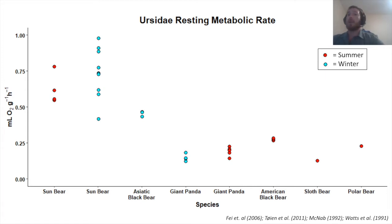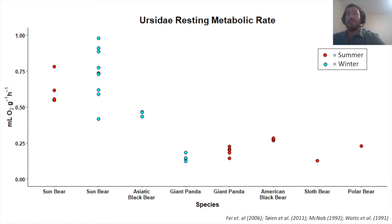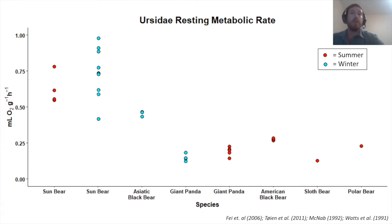One confounding variable that might come into play is activity level. When measuring resting metabolic rate, ideally we want the bear to sit completely motionless for an extended period of time. Bears don't really listen to us when we ask them to do things and some movement is inevitably involved. I did record each run with a video camera and I'm currently working through a way to quantify the amount of activity during each measurement in order to determine the effect that this might have.